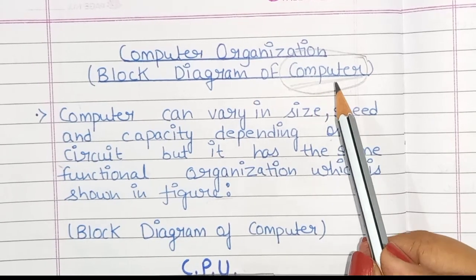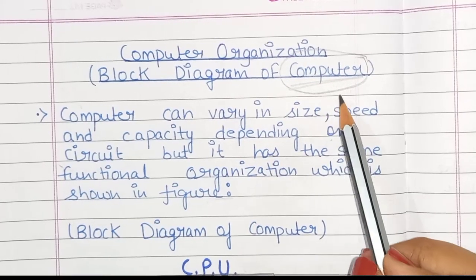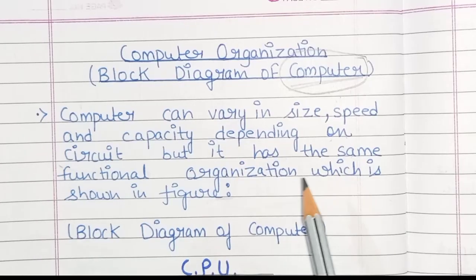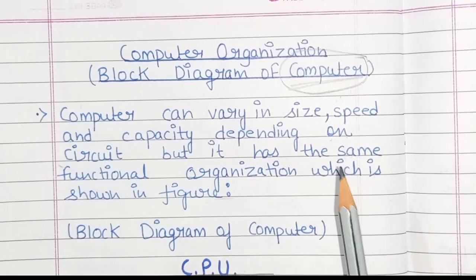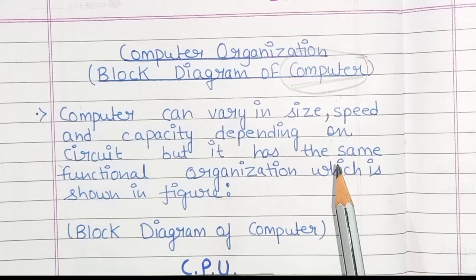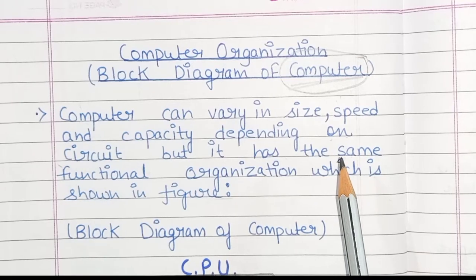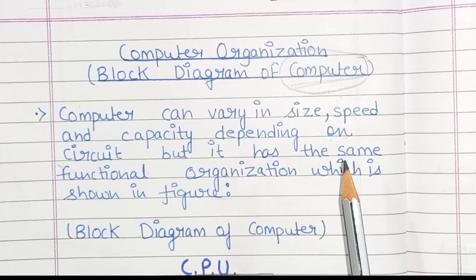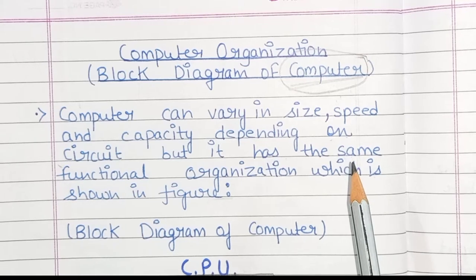What is a computer? A computer is a man-made electronic machine which stores, reads and processes data to produce meaningful information as output. It means that a computer follows the input-process-output cycle. Input is entered into the computer through an input device like a keyboard, and output is received through an output device like a printer.